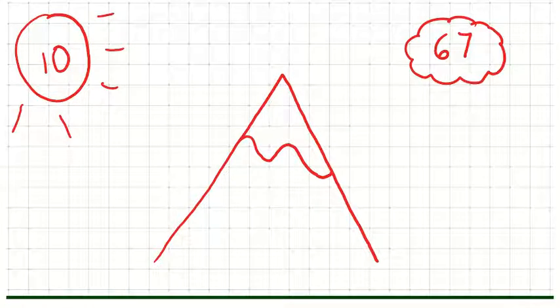So I want to do 67 to the nearest ten. The first thing I'm going to do is identify which numeral is in the tens space. So the six is in the tens space. So that's the one that I'm looking at.